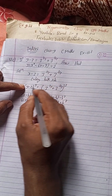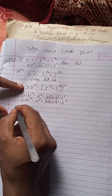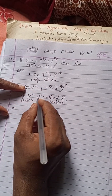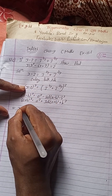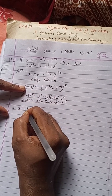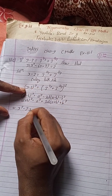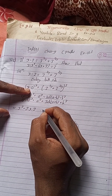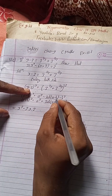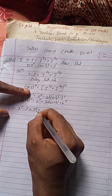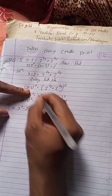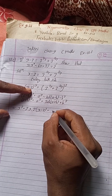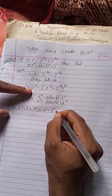Applying this formula to the left side: (x minus 2)³ gives x³ minus 3 times x times 2 times (x minus 2) minus 2³.